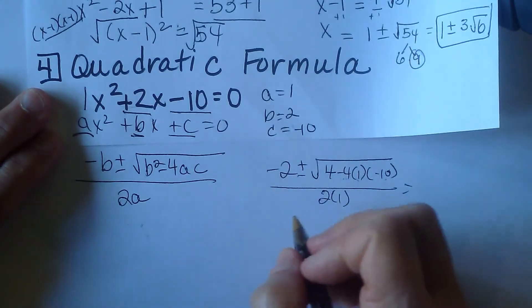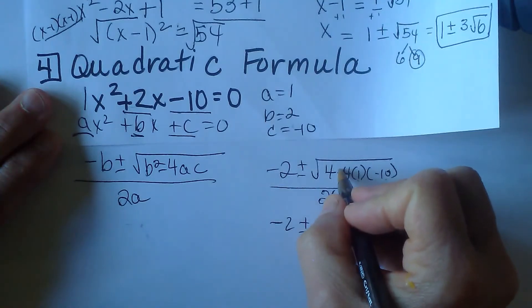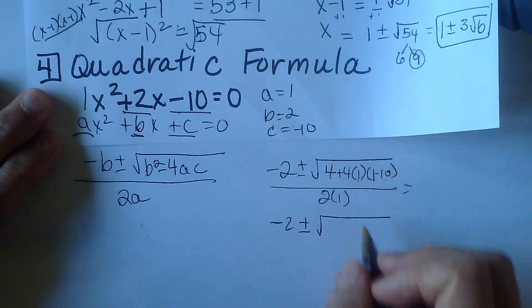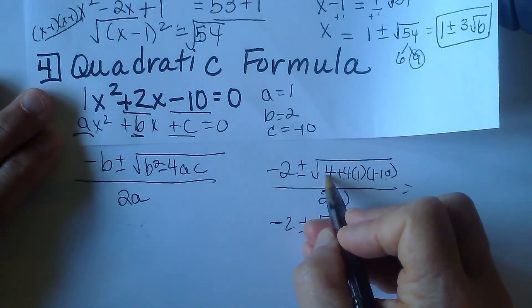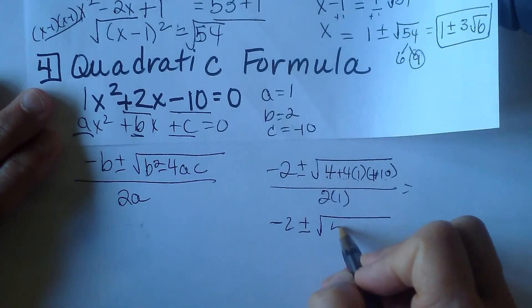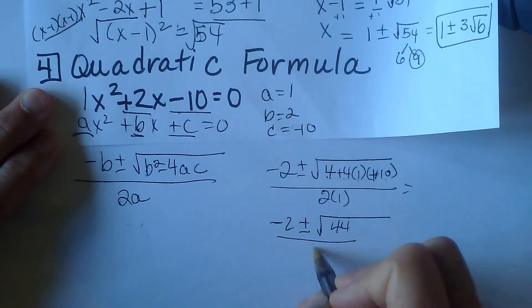Now to simplify this, we'll get negative 2 plus or minus. This is the hardest part, and this part under the radical is called the discriminant. We're going to have 4. The double negative makes a positive. So 4 plus 40 is 44 all over 2.